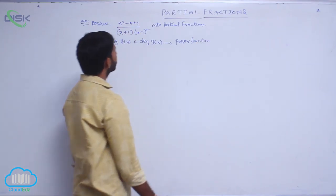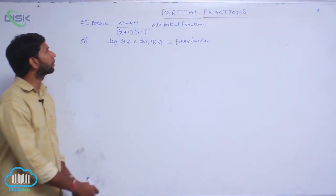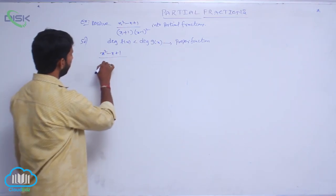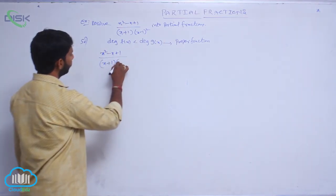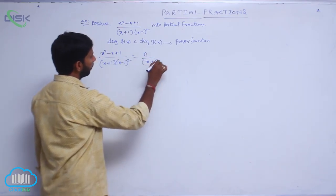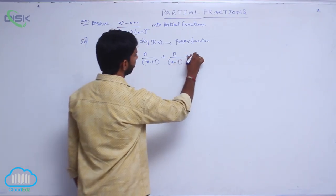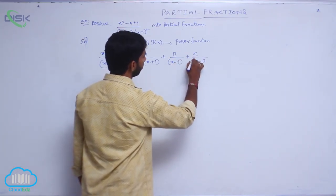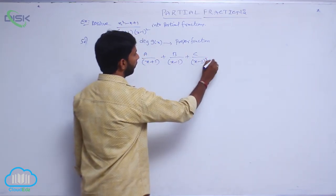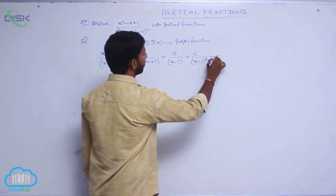It is said to be proper fractions and g(x) contains repeated factors. That is, x squared minus x plus 1 by x plus 1 into x minus 1 whole square is equal to A by x plus 1, plus B by x minus 1, plus C by x minus 1 whole square. Consider this as condition number 1.